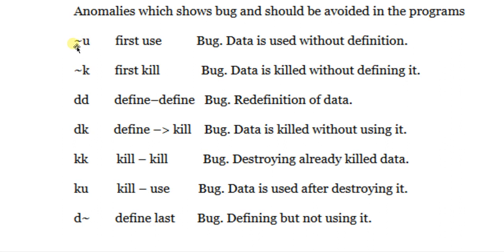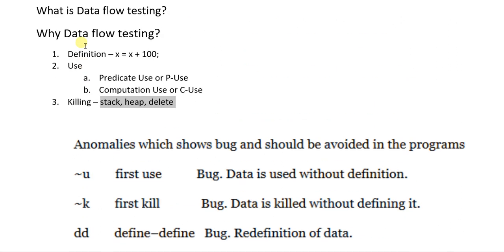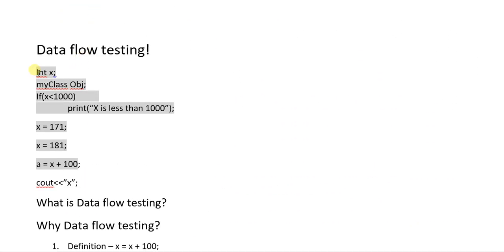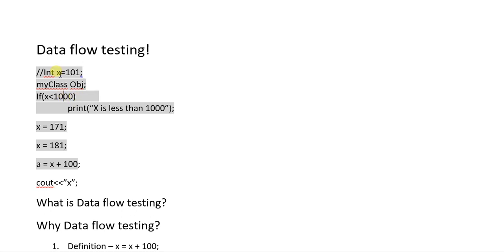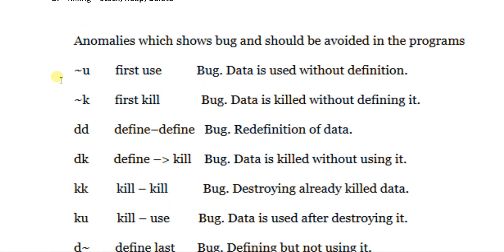The tilde operator shows the first appearance of a variable. So tilde-U means the first appearance of the variable was as a use — we didn't define the variable but we are using it. For example, if we comment out the definition of X, its first appearance is in the predicate logic comparison, and we are using it without defining it. This is an anomaly and a logical bug.